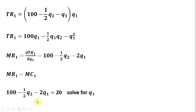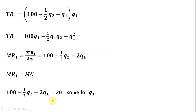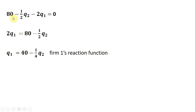Setting MR = MC and solving for Q₁: subtract 20 from both sides, so 100 − 20 leaves 80 on the right. Adding 2Q₁ to both sides gives that result, then dividing through by 2 we get Firm 1's reaction function. Firm 2's reaction function will be the mirror image: Q₂ = 40 − ¼Q₁.